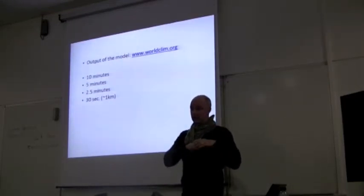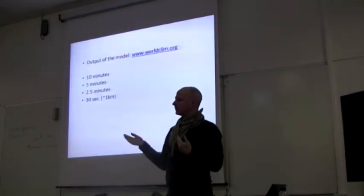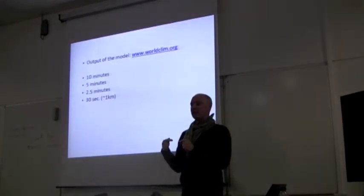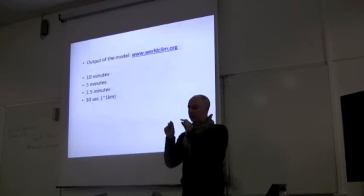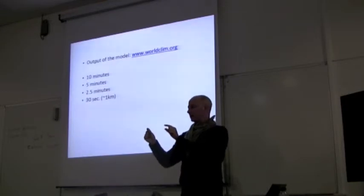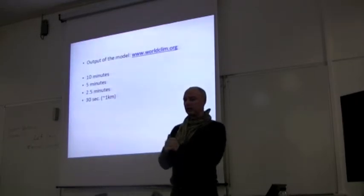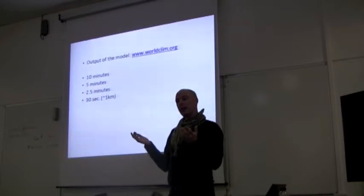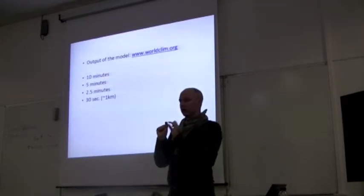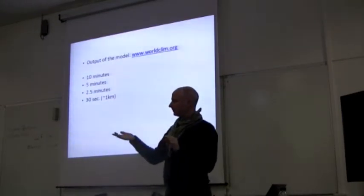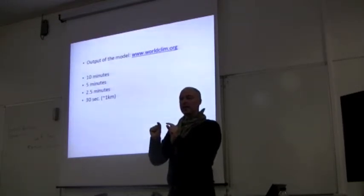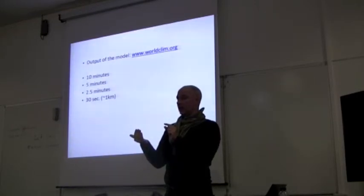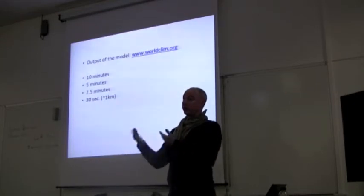Spatial autocorrelation with occurrence records is a problem, but this is also a place where it can actually work in your favor. If you don't have perfect georeferences and your point doesn't fall into a given grid square but really falls into the one next door, the adjacent pixel is likely to be rather similar. So it seems reasonable that this does not have a very large effect — though you can't really show that without testing it. Spatial autocorrelation can be your friend.